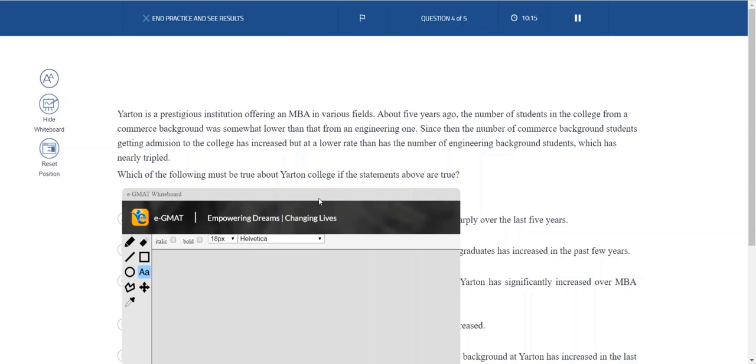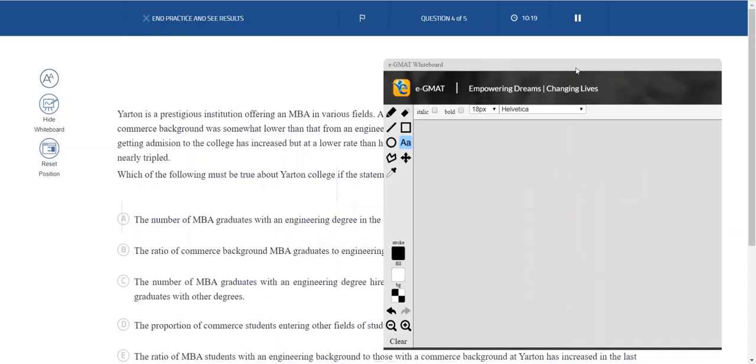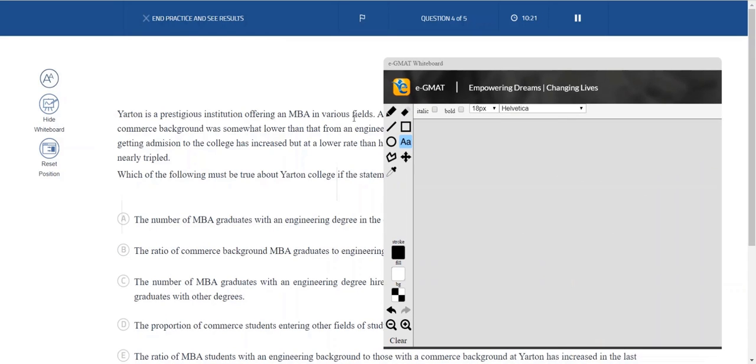So now I'm going to use the whiteboard typically how I would use a pen and paper for this question. So for example, I'm going to draw a few lines. You will understand why, because we are going to do proportion comparisons. And then I'll introduce text boxes. Double click, you can always add a text box. So let's talk about people from an engineering background, then let's talk about people from a commerce background.